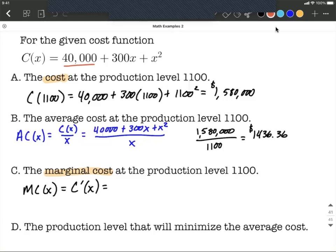So kind of one term at a time here: the derivative of 40,000, it's a constant so that derivative is going to be zero. Next term we have 300x which is a linear term so it's just going to be 300. And then finally our x² we can use the power rule, bring down the 2, reduce the exponent by 1. So 300 plus 2x is going to be a representation of our marginal cost or the derivative of the cost function.